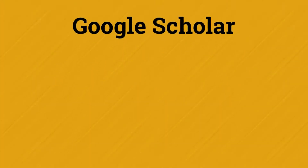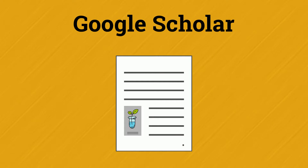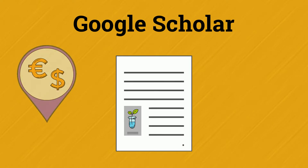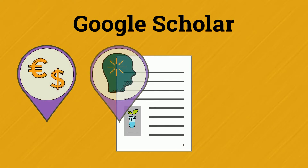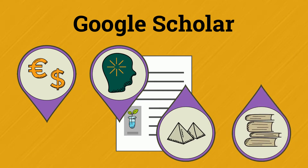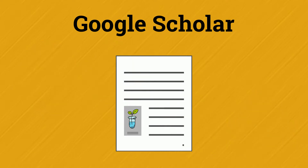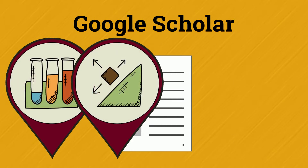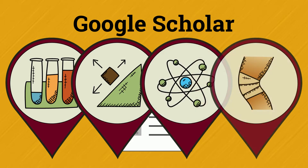Google Scholar is a multidisciplinary database. When you search Google Scholar, you are searching across different subjects like business and psychology and history and English all at the same time. Overall, Google Scholar has more resources for the hard sciences like chemistry and physics and medicine than it has for the humanities and social sciences.